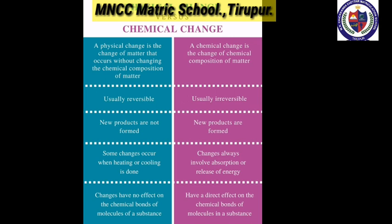In a physical change, some changes occur when heating or cooling is done. In a chemical change, changes always involve absorption or release of energy. Physical changes have no effect on the chemical bonds of molecules of a substance, whereas chemical changes have a different effect on the chemical bonds of molecules in a substance.